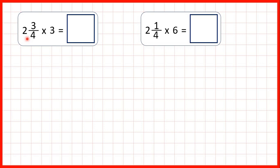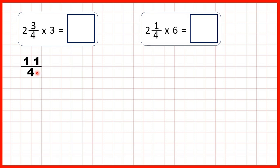We're multiplying a mixed number by a whole number, and this time we're going to get our answer by changing the mixed number into an improper fraction. To do that we multiply the whole number by the denominator and then add the numerator. 2 times 4 is 8, plus 3 is 11, and the denominator stays the same. So as an improper fraction we can write 2 and 3 quarters as 11 quarters.